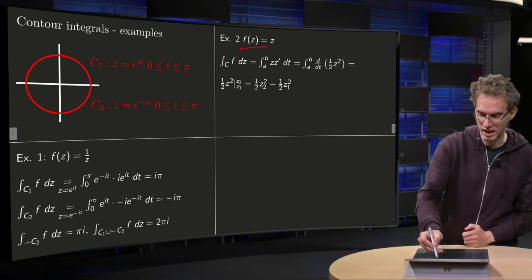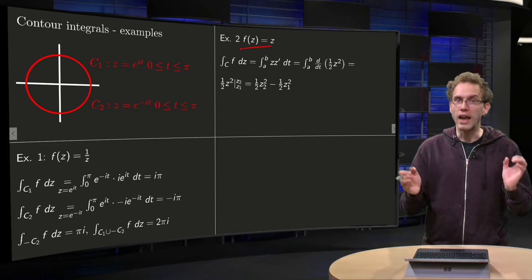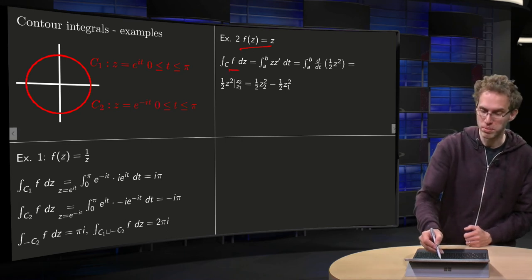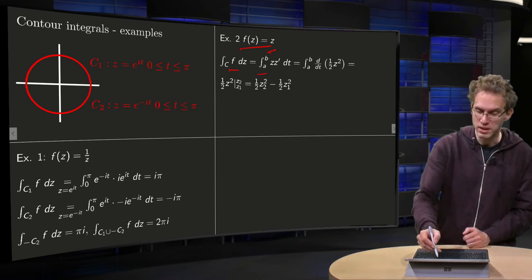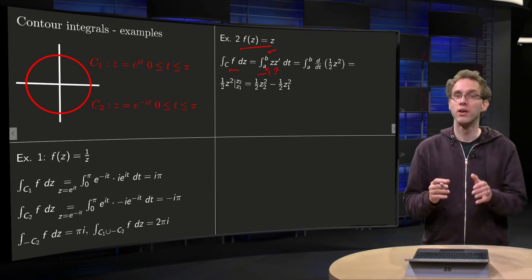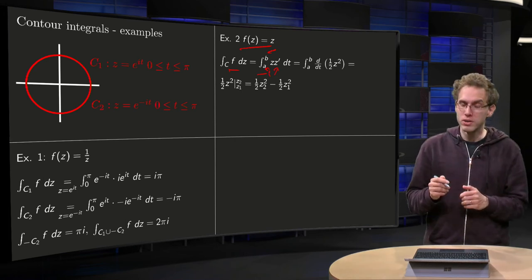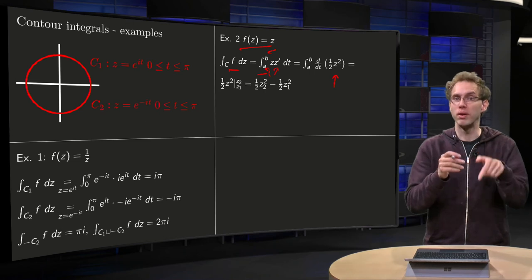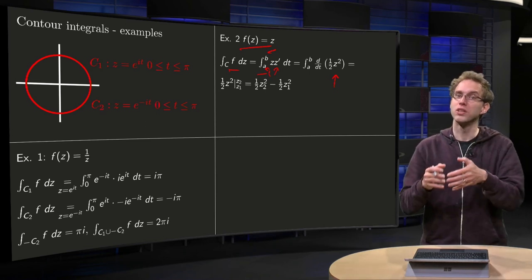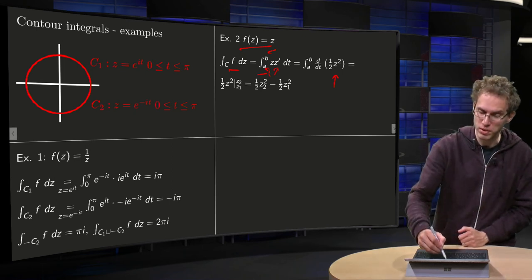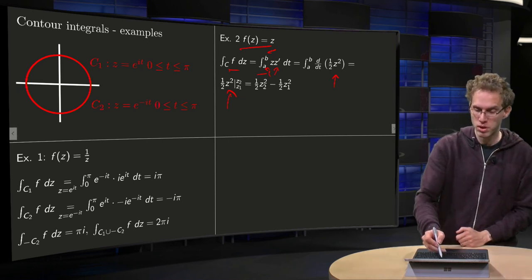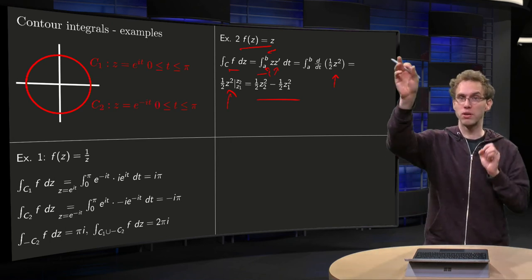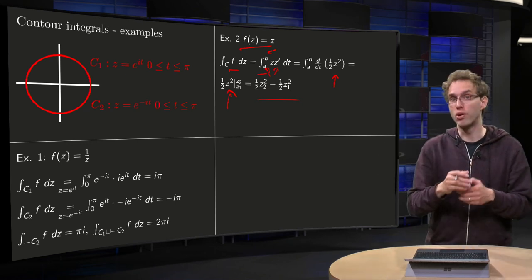Second example, f of z equals z, and now we take just any point. Then we know the integral f dz equals integral from a to b of z of t times z prime dt, where we do not specify the curve. You know that z times z prime is the derivative of 1 half z squared. So we end up with the integral from a to b of the derivative of 1 half z squared. We can use the main theorem of calculus, that gives us 1 half z squared between end point minus starting point, so 1 half times z2 squared minus 1 half times z1 squared. So in this case, the value of the integral only depends on start point and end point, and in particular, an integral along a closed path would be 0.